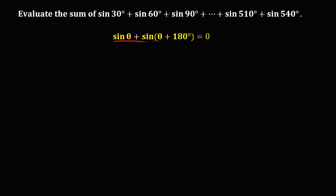Using this equation and observing the given, the interval is 30 degrees. So we have sin 30° plus sin(30° + 180°) = sin 30° + sin 210°, which equals 0.